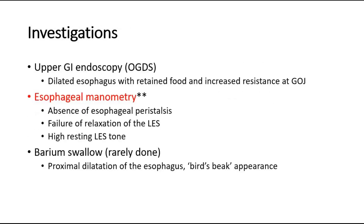For investigations, in any patient presenting with dysphagia, an upper GI endoscopy (OGDS) is essential in order to exclude cancer as the cause of symptoms. In severe disease, endoscopy might show a dilated esophagus with retained food and increased resistance at the gastroesophageal junction.